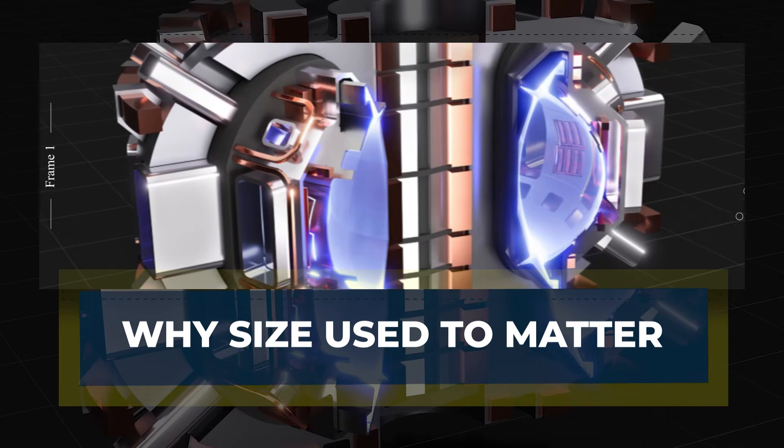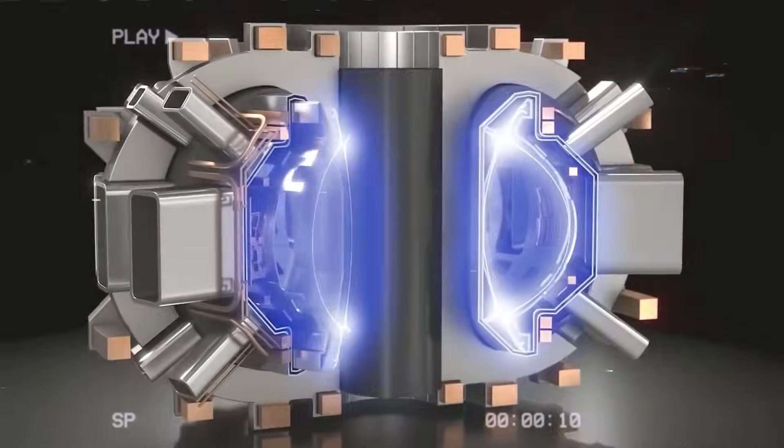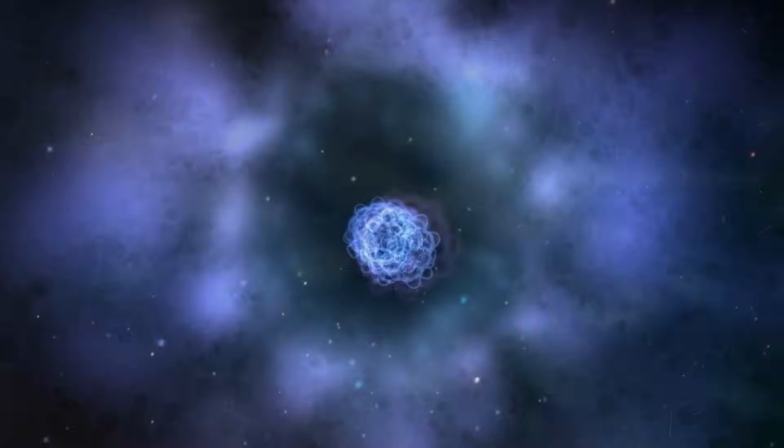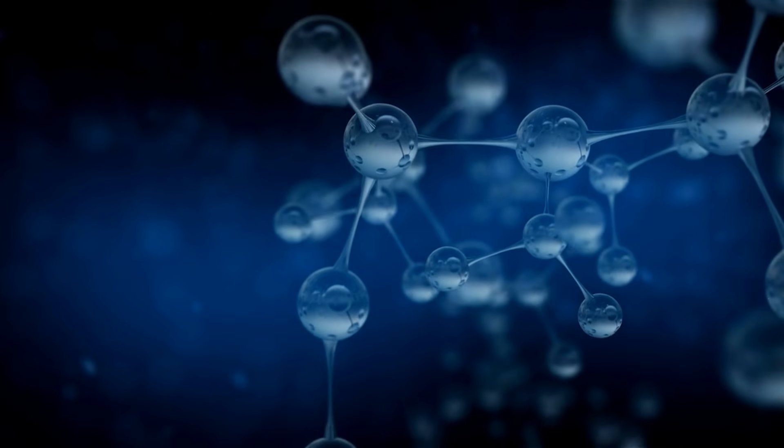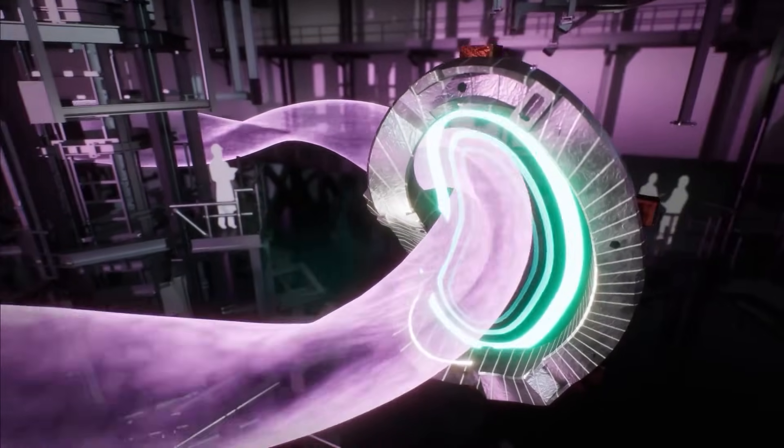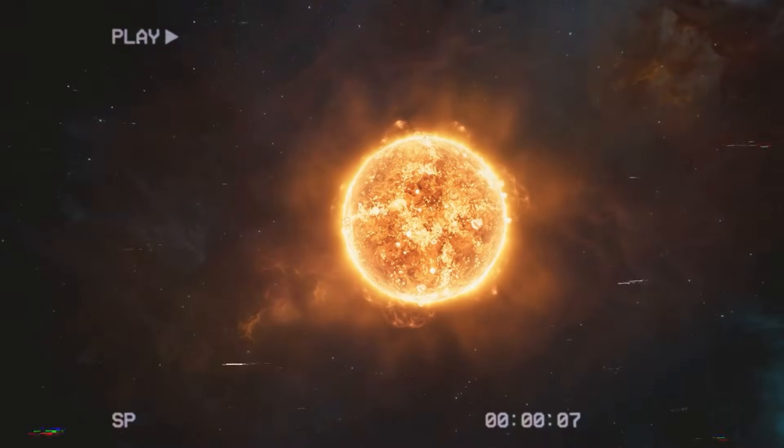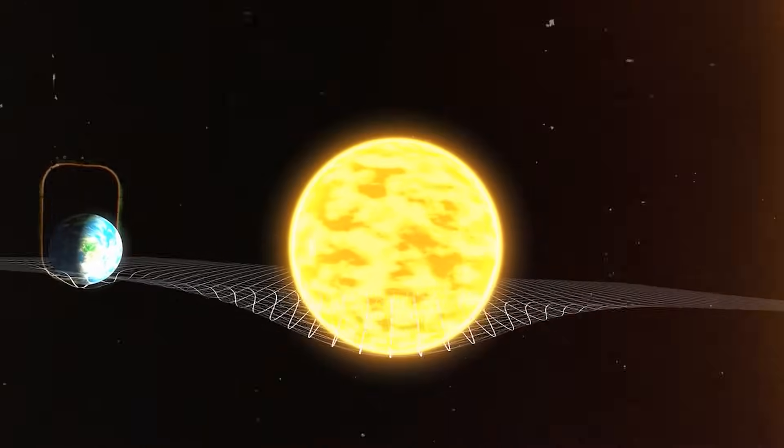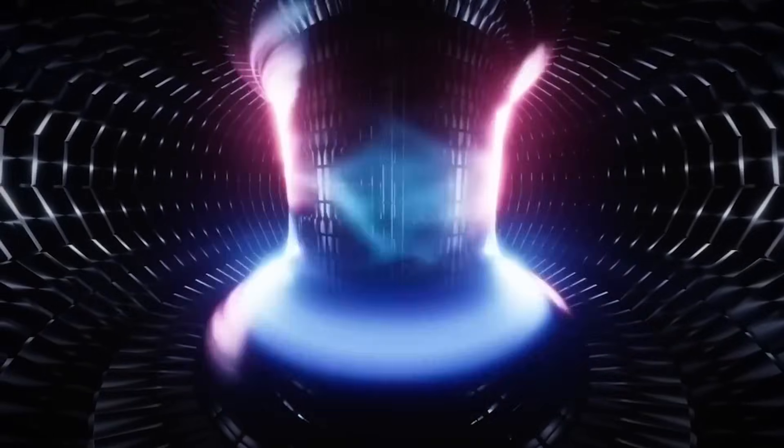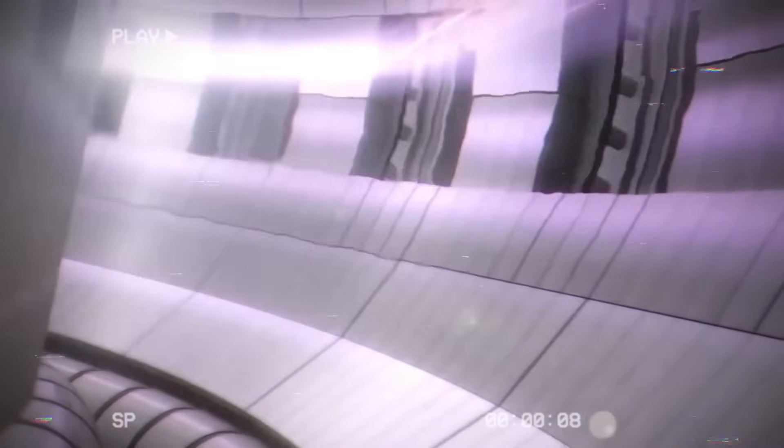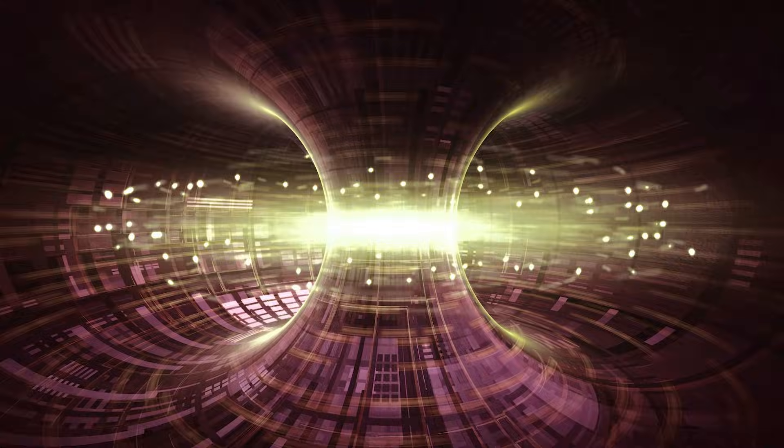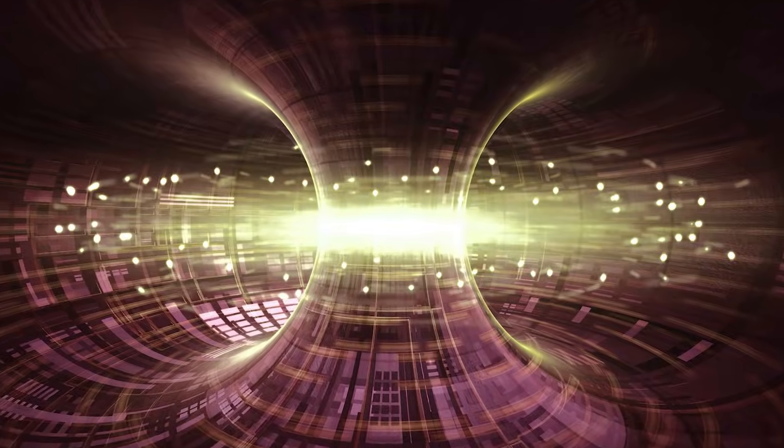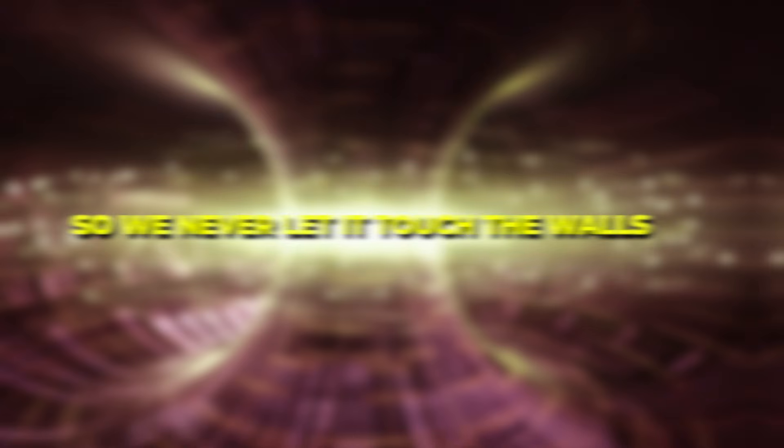Fusion sounds easy when you say it fast: Take two light atoms, usually hydrogen, and push them together until they merge. When they fuse, a little mass becomes a lot of energy. The sun does this all day using gravity. It squeezes fuel under insane pressure because it's enormous. On Earth we can't do that, so we use heat. A fusion plasma must reach around 100 million degrees Celsius, so we never let it touch the walls. We suspend it with magnetic fields like an invisible cage.